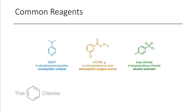Another interesting reagent is MCPBA, metachloroperbenzoic acid. This is used as a very electrophilic oxygen source. The reason it's electrophilic is that a hydrogen can actually hydrogen-bond to the carbonyl of this peracid, which makes it very electrophilic at the oxygen. One other interesting compound is tosyl chloride, similar to toluenesulfonic acid, which we talked about last time. Tosyl chloride is useful for the synthesis of tosylates — it can react with alcohols and make them into a good leaving group. And we're going to get to what a leaving group is later today.